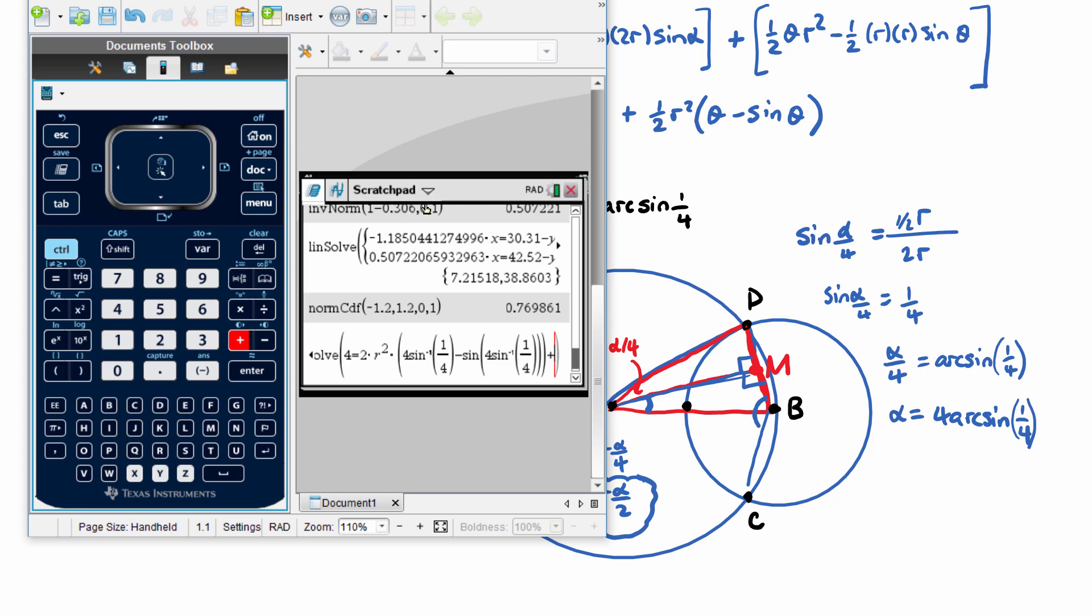Then we have a half, so 0.5 times R squared. And this will be times outside of that bracket, will be theta. Now we know theta.